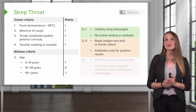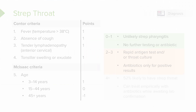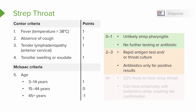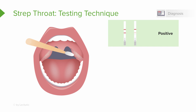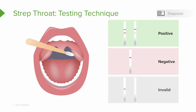If the patient scores two to three points, a rapid antigen test — rapid strep test — is recommended, with optional follow-up throat culture. Treatment is only given if the rapid strep test or throat culture is positive. If the patient scores four or more points — every sign of strep and adjusted for age — there is still only a 52% chance of strep throat, with 48% being viral. These patients can be treated empirically while awaiting results, but this is a discussion to have with patients given the associated risks. On the test, a positive result shows a dark or faint line in addition to the control line — any line is considered positive. A negative shows only the control line. An invalid result means the control line did not appear, and the patient should be reswabbed or retested.